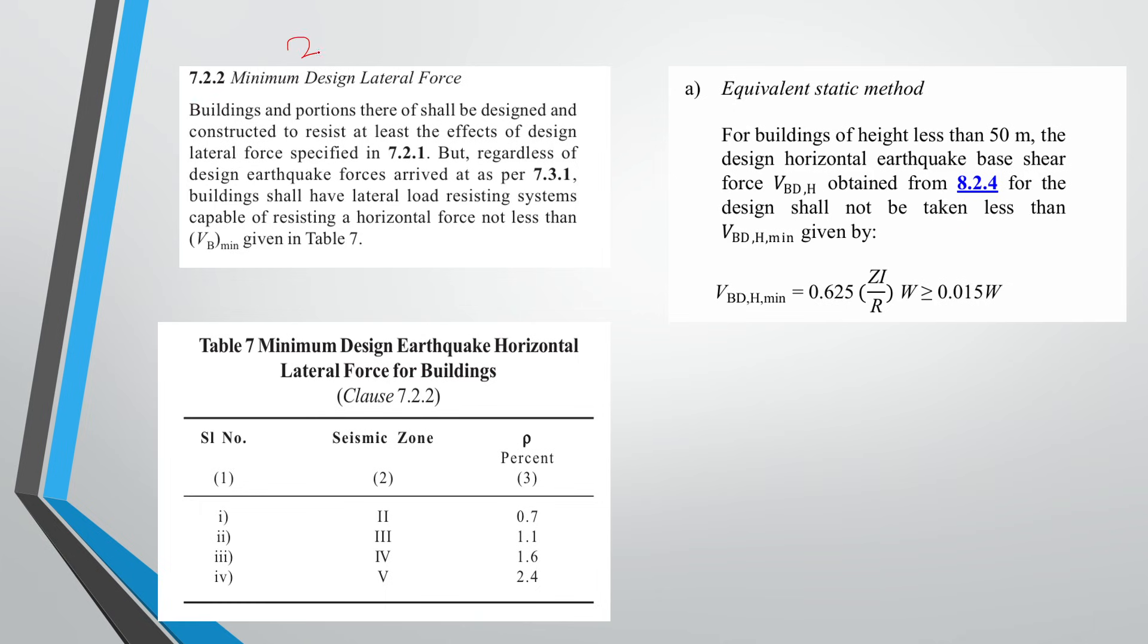Now in 2016, there was a table for minimum design earthquake horizontal lateral force for the building. It was as per the zone, like zone 2. This was basically the minimum AH because we have seen that VB equals AH into W. So what should be the minimum AH? For zone 2, it was 0.7%, for zone 3 it was 1.1%, for zone 4 it was 1.6%, and for zone 5 it was 2.4% of seismic weight.